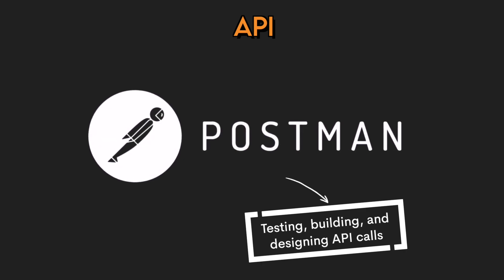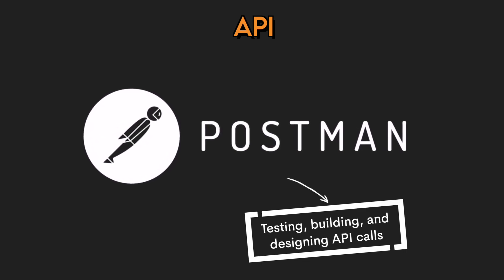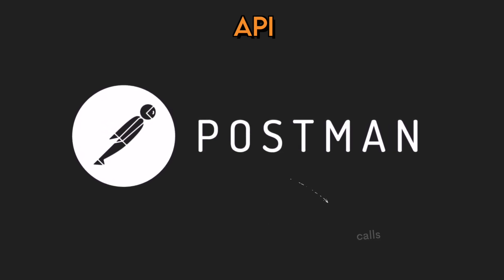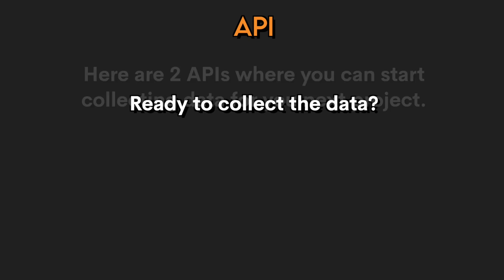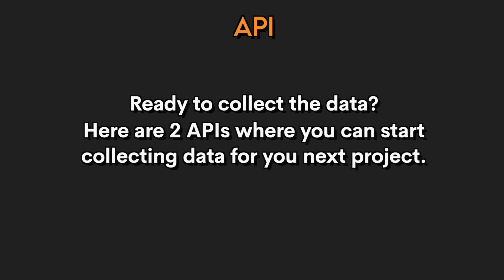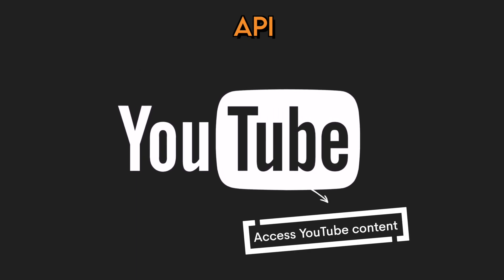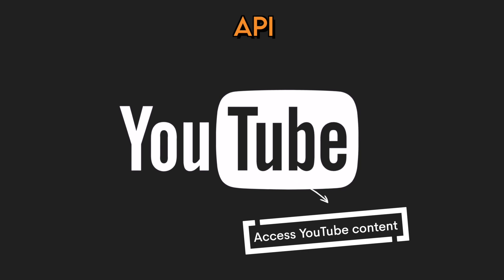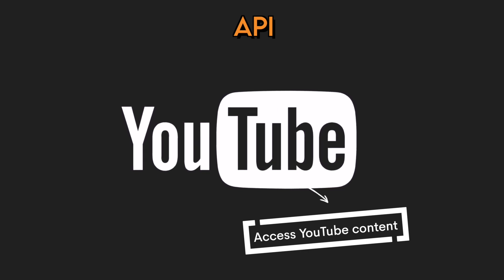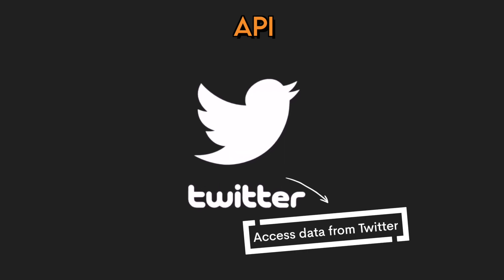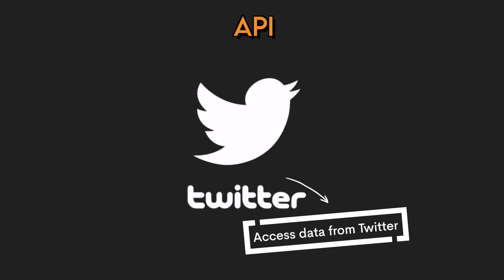Want to test your APIs out manually? Postman is a tool for testing, building, and designing API calls. It allows you to send requests and see the response from the server. Ready to collect some data? Here are two APIs where you can start. The YouTube API lets you access YouTube content like videos, channels, or playlists, and manage features like comments, searches, and browsing. The Twitter API lets you access data like profiles, tweets, or search results — you can also post tweets and send messages. You'll get a front-row view of the dumpster fire that is now Twitter.